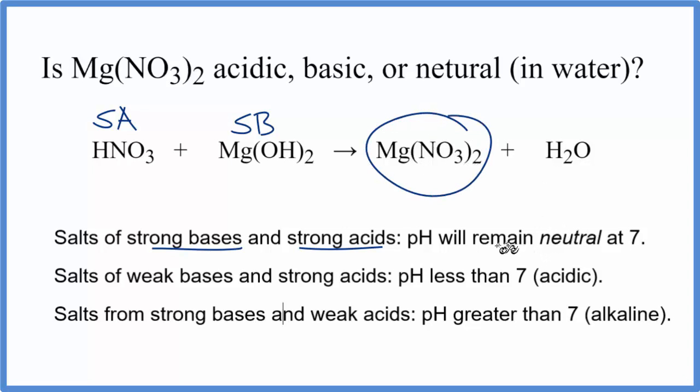the resulting salt, the magnesium nitrate, will be neutral, have a pH of 7. So in answer to our question, Mg(NO₃)₂ in water, it forms a neutral solution.